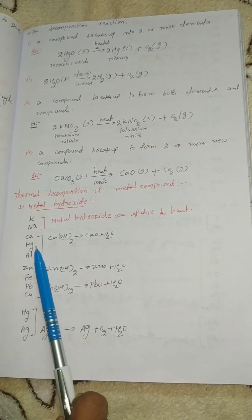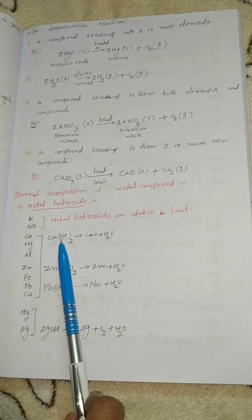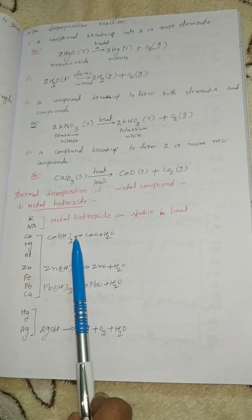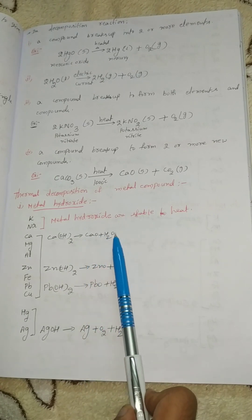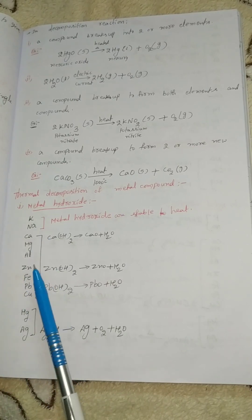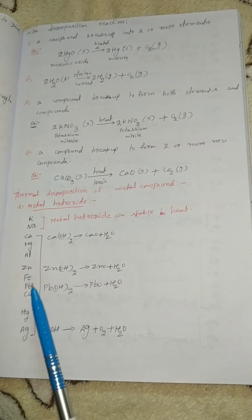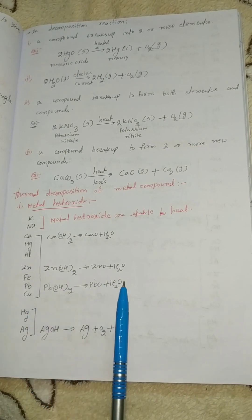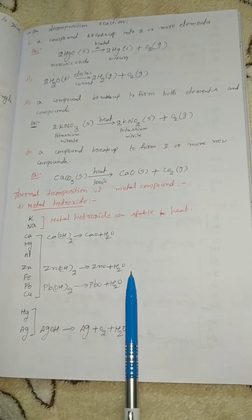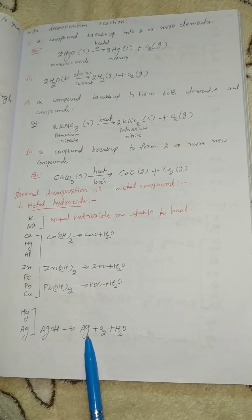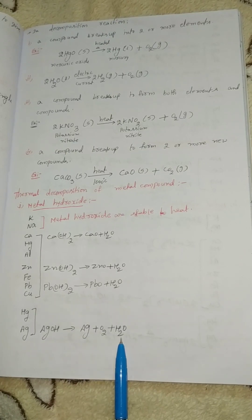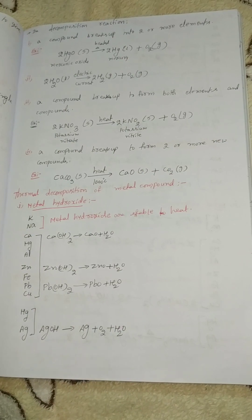Next: calcium, magnesium, aluminium also give oxide plus water when decomposed. For zinc, iron, lead, and copper — the same reaction occurs: oxide plus water is formed. For mercury and argentum, 3 products are formed: argentum plus oxygen plus water.